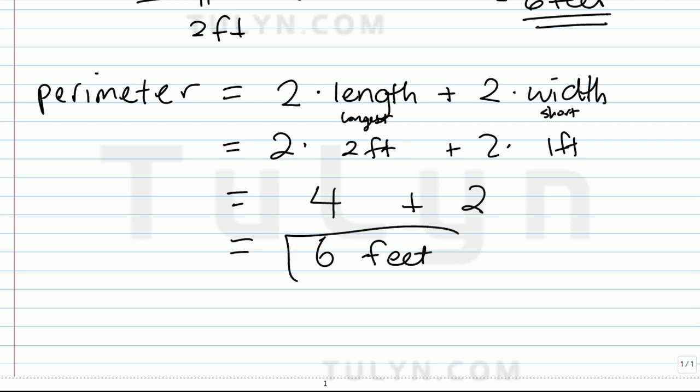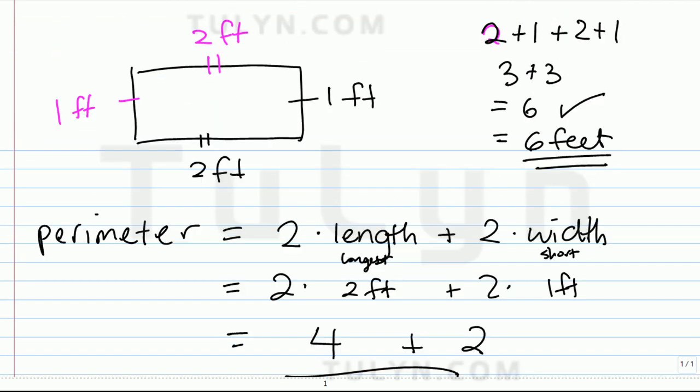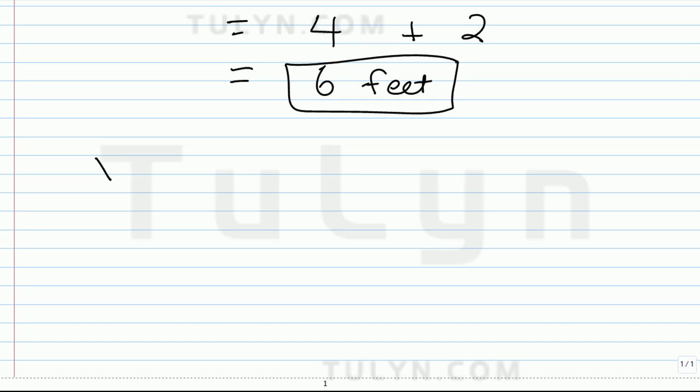Using both methods, you're going to get the same answer. So you can either memorize perimeter equals twice the length plus twice the width, or perimeter equals length plus length plus width plus width. It's your choice.